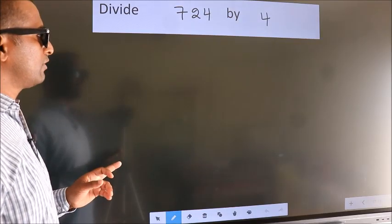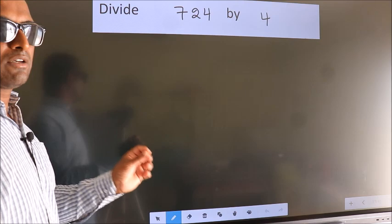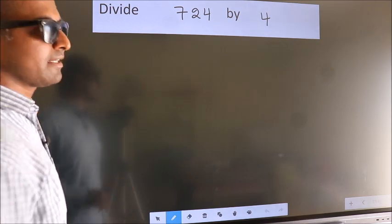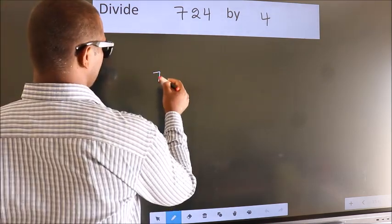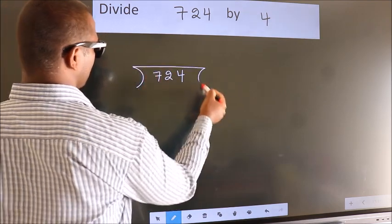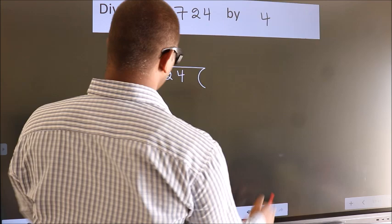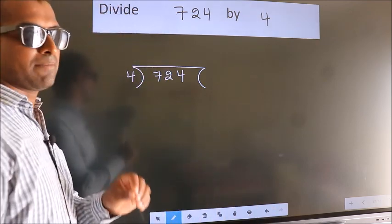Divide 724 by 4. To do this division we should frame it in this way. 724 here, 4 here. This is your step 1.